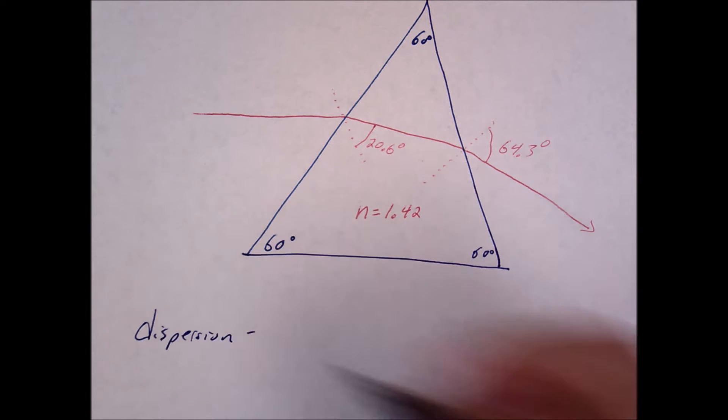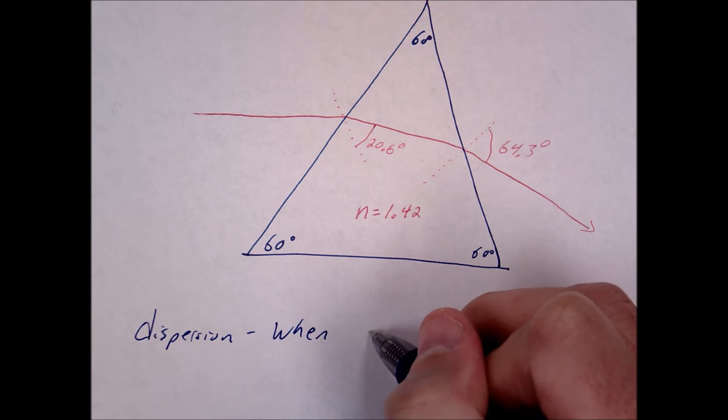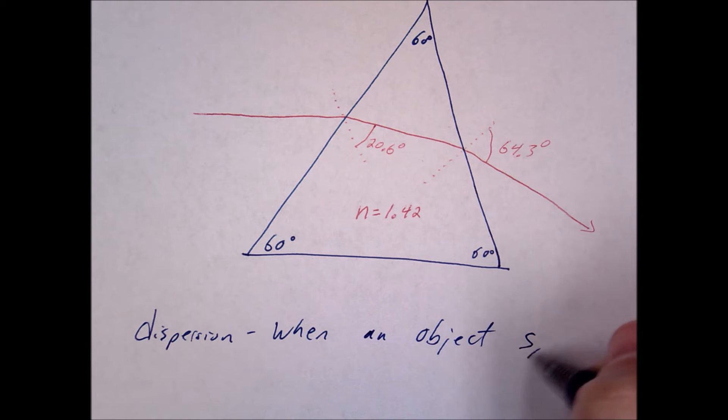So dispersion is when something, when an object splits light into its individual wavelengths.